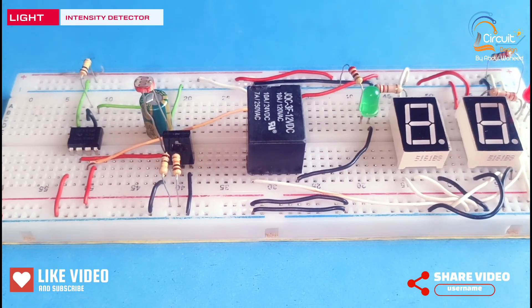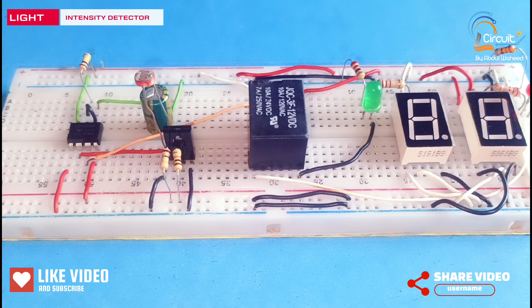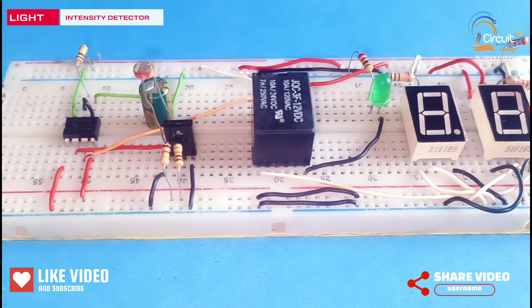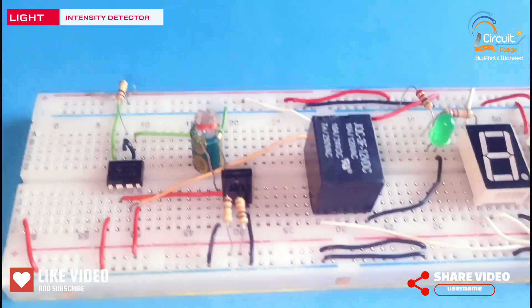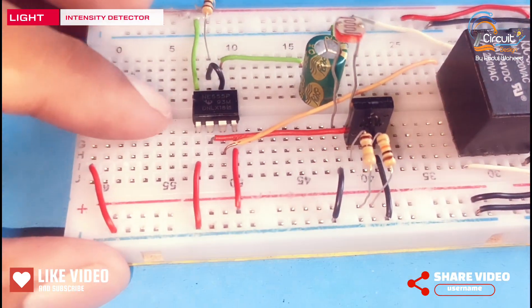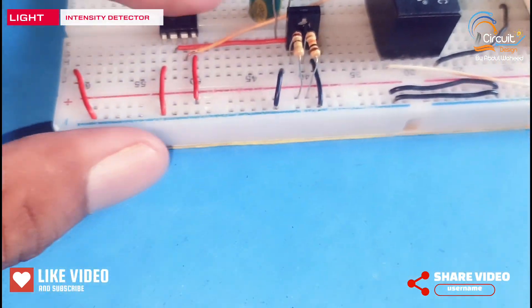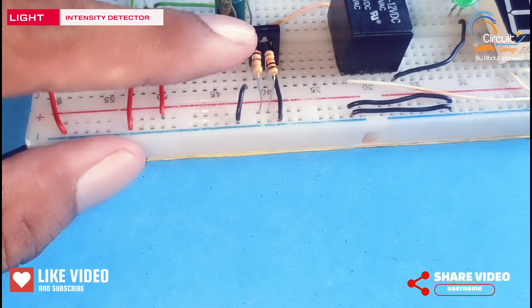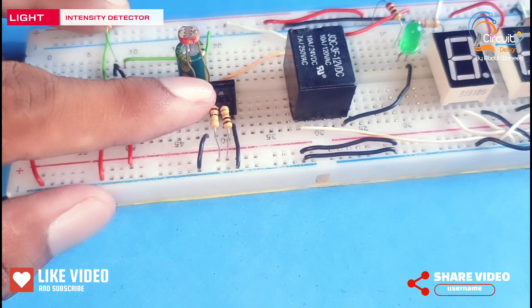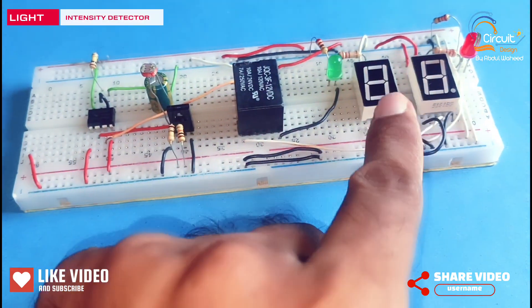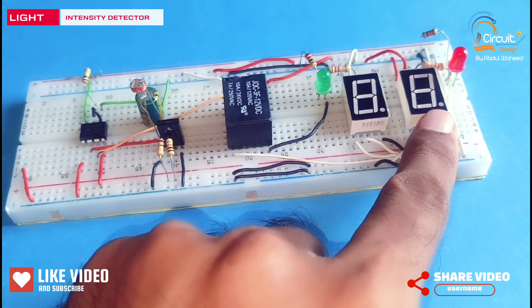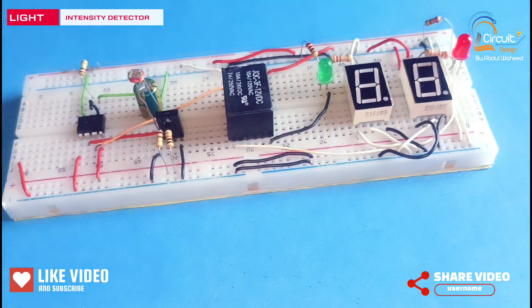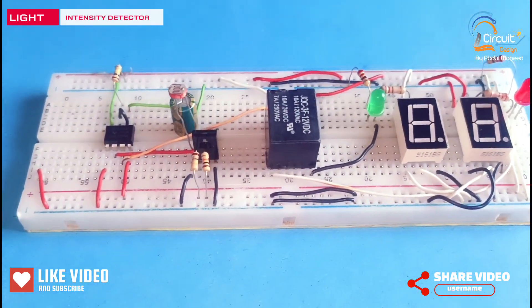Friends, today in this video I will discuss a light intensity detector circuit. In this circuit I use an 8.5 timer, LDR, transistor 13003 ED, a relay switch, two 7-segment displays, and two LEDs. I request you please watch this video till end and subscribe my channel for more videos.